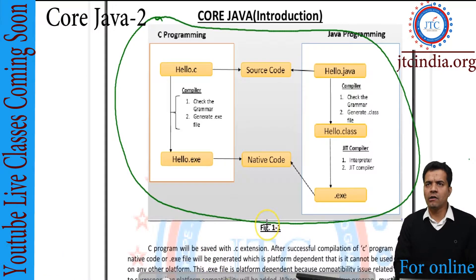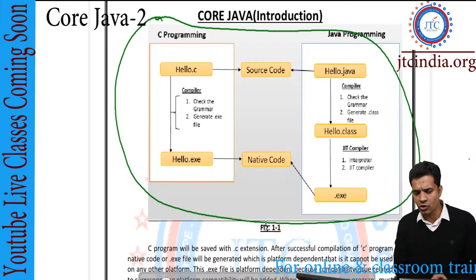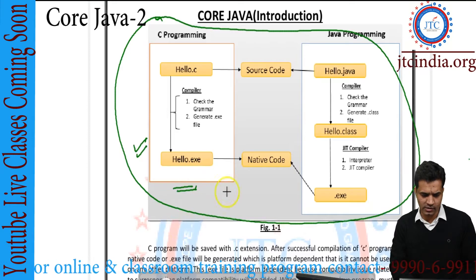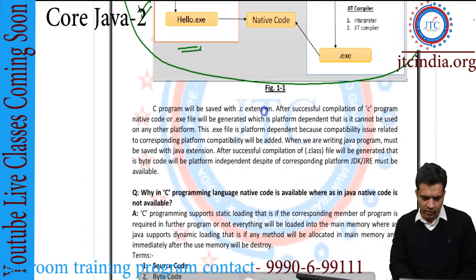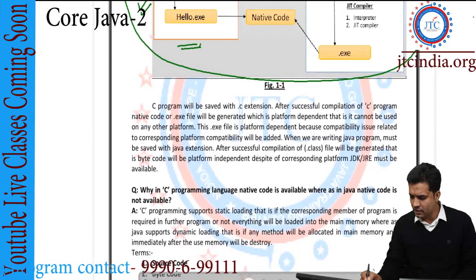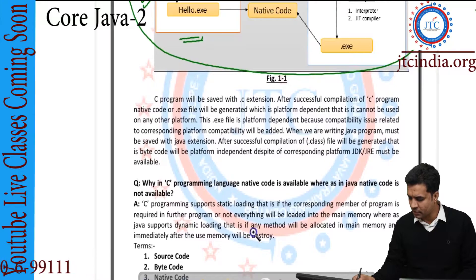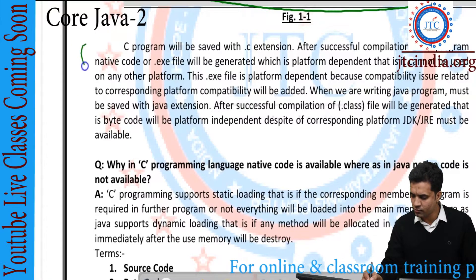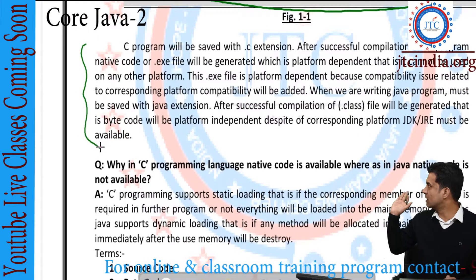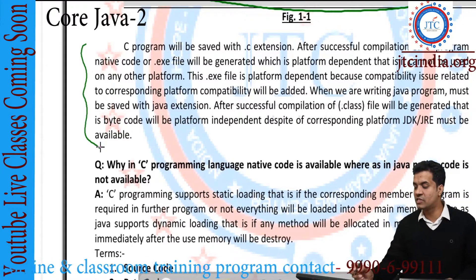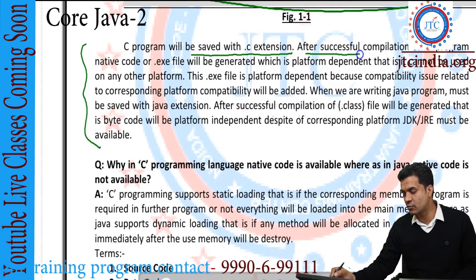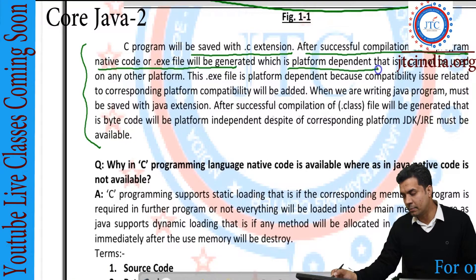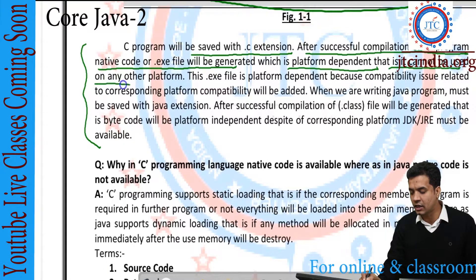Everything I am explaining here is in this document, so you need to go through all these documents. The diagrams I have drawn are visible here, and the theory part related to these diagrams is also given inside. You must read the theory part as well. It is clearly visible that C programming files are saved with the .c extension; after successful compilation, native code or the .exe file is generated, which is platform dependent and cannot be used on any other operating system.